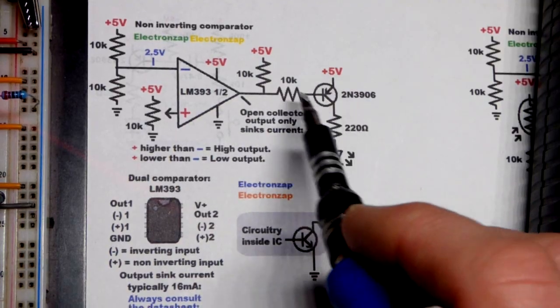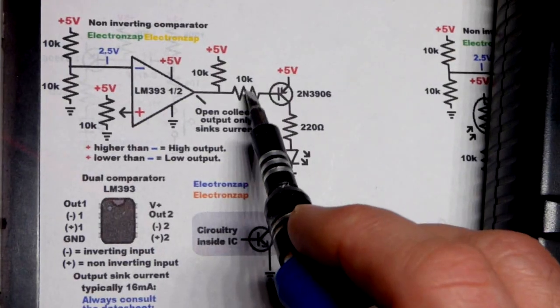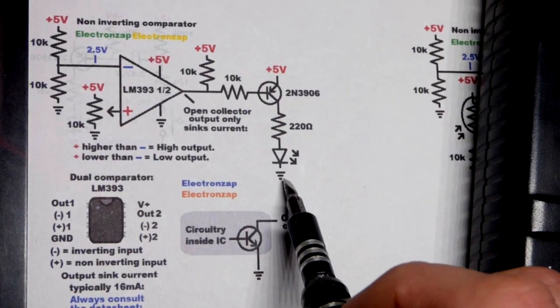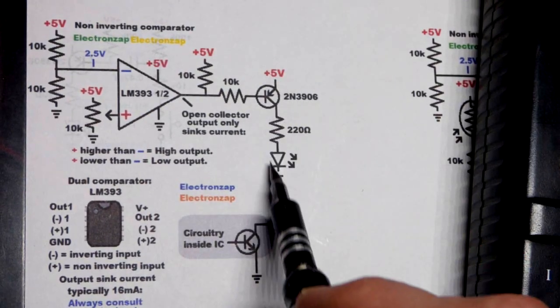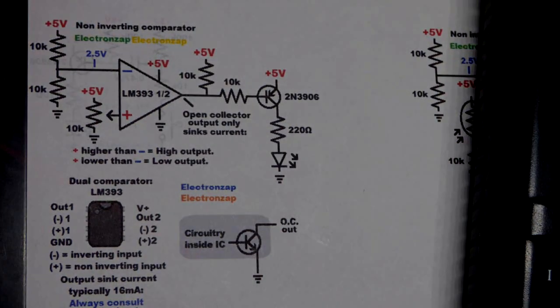That'll be a connection to ground that turns on a PNP bipolar junction transistor. So we need that resistor to limit current. Low output turns on the PNP bipolar junction transistor and the LED turns on.